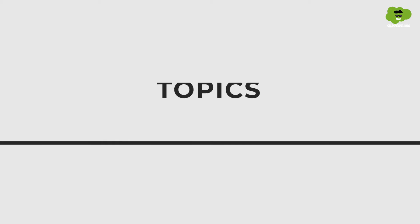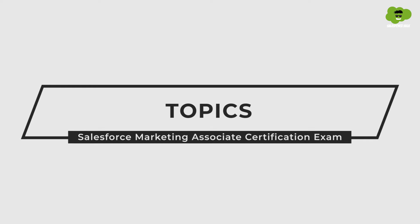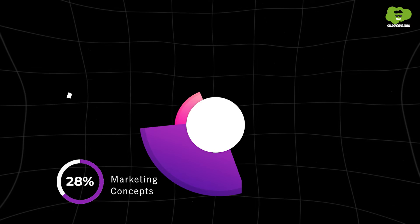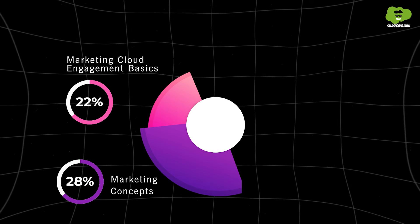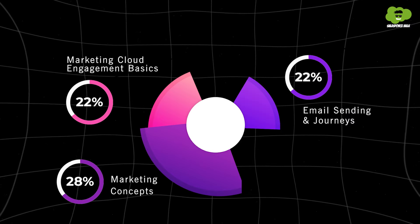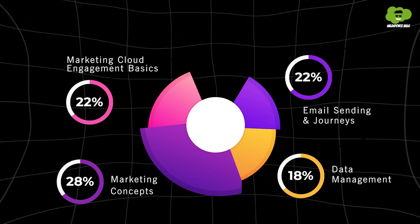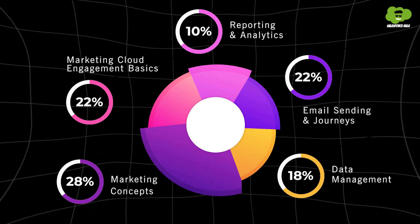Now let's look at the topics covered in Salesforce Marketing Associates Certification. It covers 28% marketing concepts, 22% marketing engagement basics, 22% email sending and journeys, 18% data management, and 10% reports and analytics. That's all about the exam pattern and syllabus.